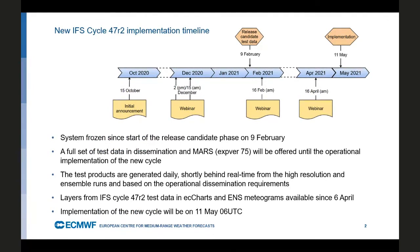47R2 was frozen since the start of the release calendar on the 9th of February. A full set of test data is available for the new cycle, generated daily and shortly behind real time from the high-resolution and ensemble runs based on operational designation requirements. They're already available in EC charts, and ENFO meteograms are also available on the website. Implementation date is set for the 11th of May, and the first forecast including this new cycle will be the 0600 UTC run.